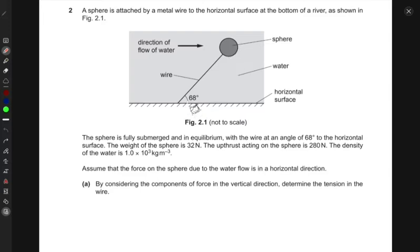The sphere is held up and we have it at an inclined angle of 68 degrees to the horizontal surface. The sphere is fully submerged and is in equilibrium with the wire at an angle of 68 degrees to the horizontal surface.